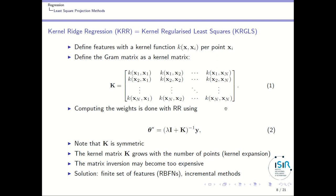With this algorithm we have one dimension in the matrix per data point in our batch, so the kernel matrix K grows with the number of data points — this is called kernel expansion. Since we have to invert that matrix, and matrix inversion is cubic in the number of dimensions, this can become too expensive when the matrix grows too large. A different solution is to have a fixed number of basis functions instead of one per data point — that will be radial basis function networks.